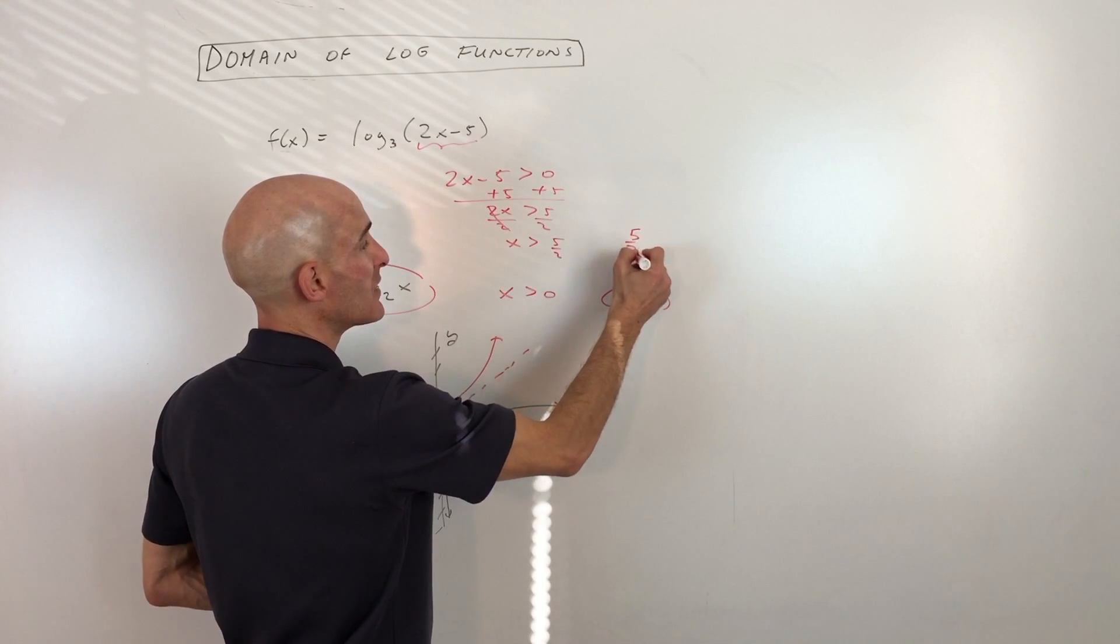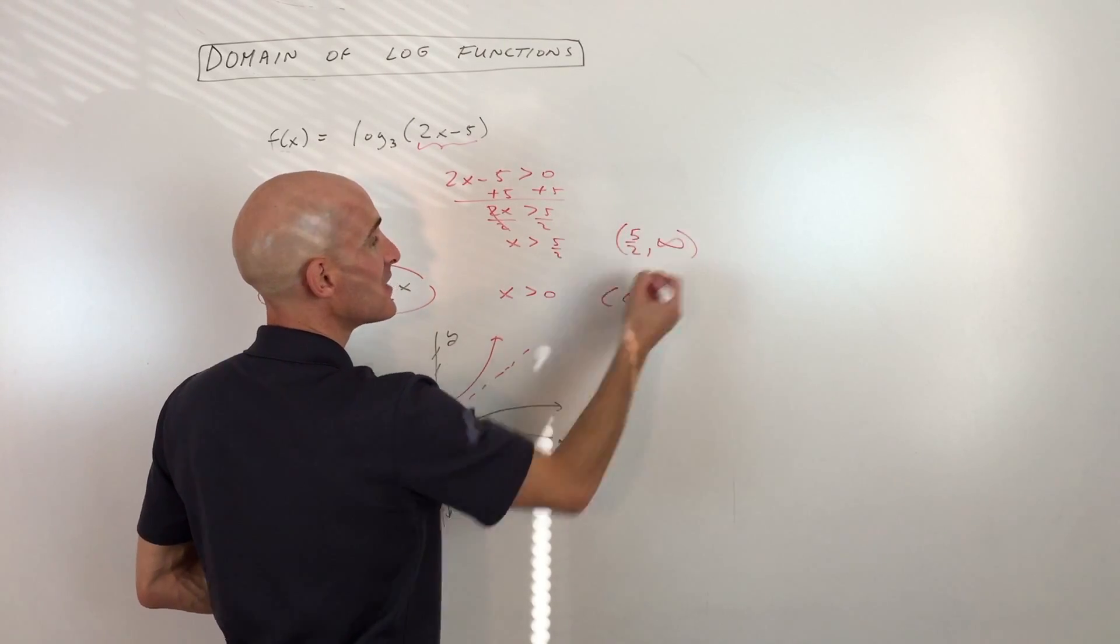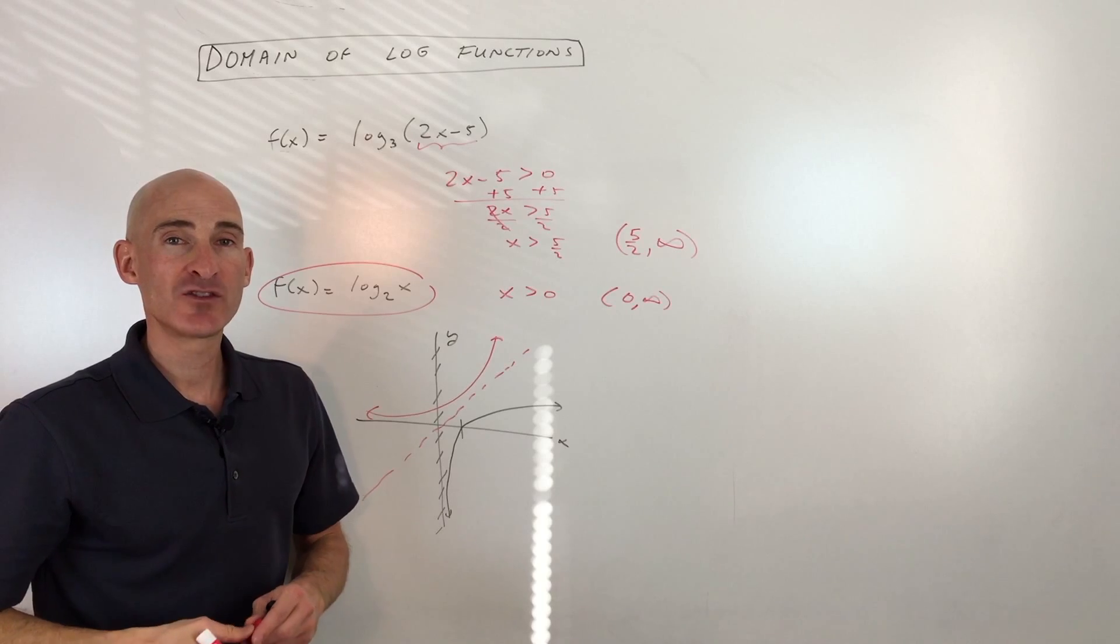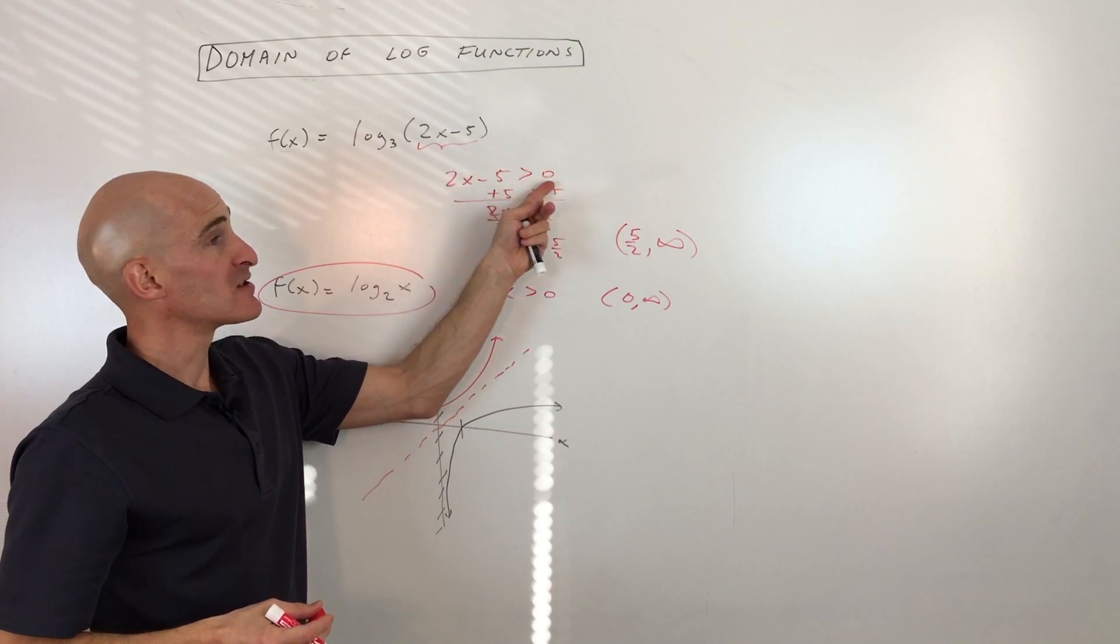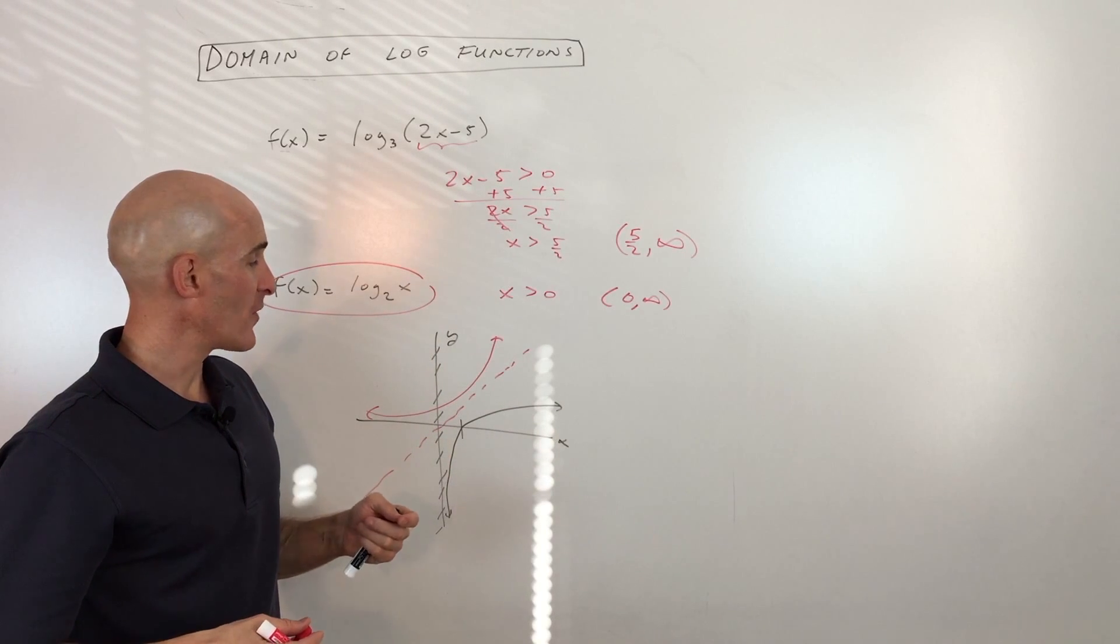Or if you want to write it in interval notation, it's five halves to infinity. So that's all you need to do to find the domain for logs. Just go ahead and set that argument greater than zero and solve for x, and that's going to be your domain.